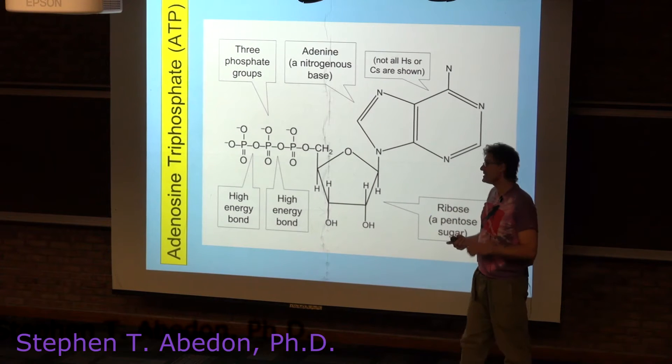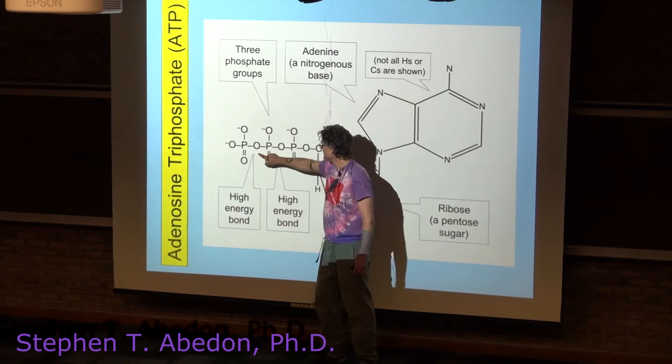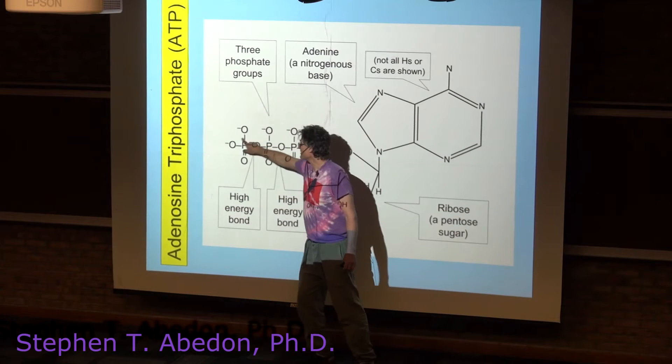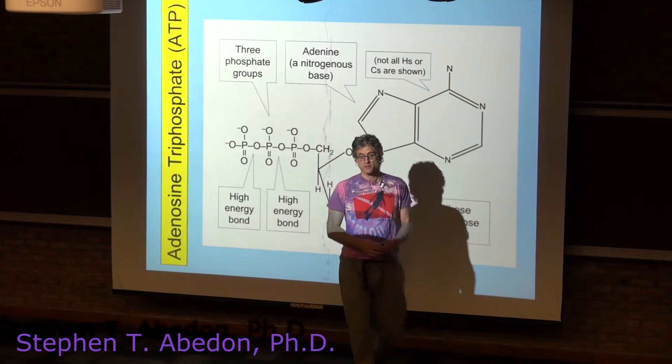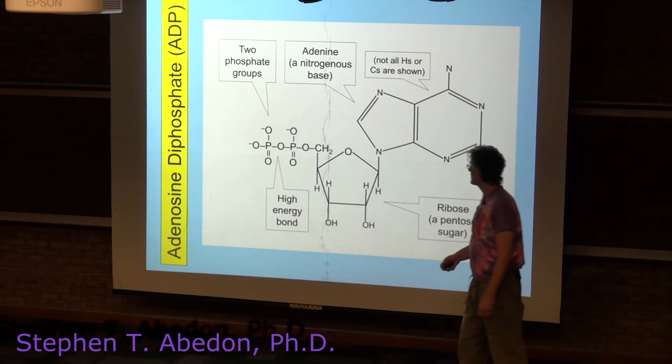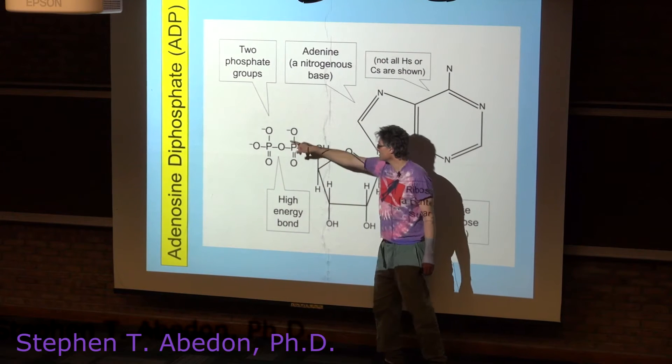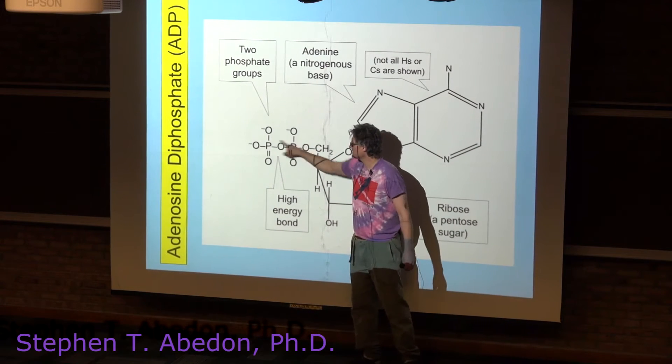When the energy in ATP is utilized, typically that phosphate is hydrolyzed off. When that happens, it produces ADP or adenosine diphosphate - di because there's only two phosphates.